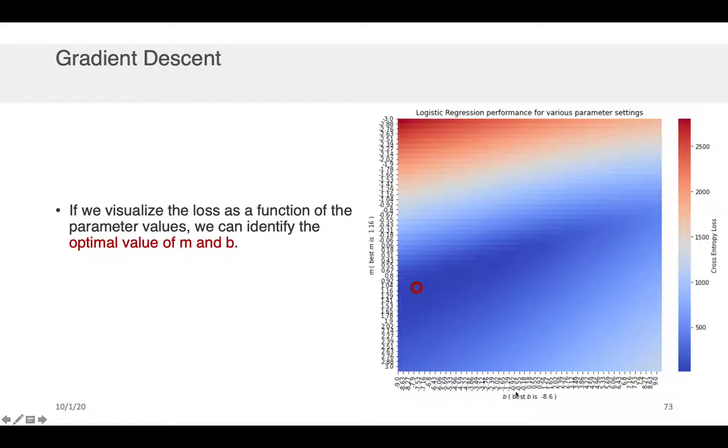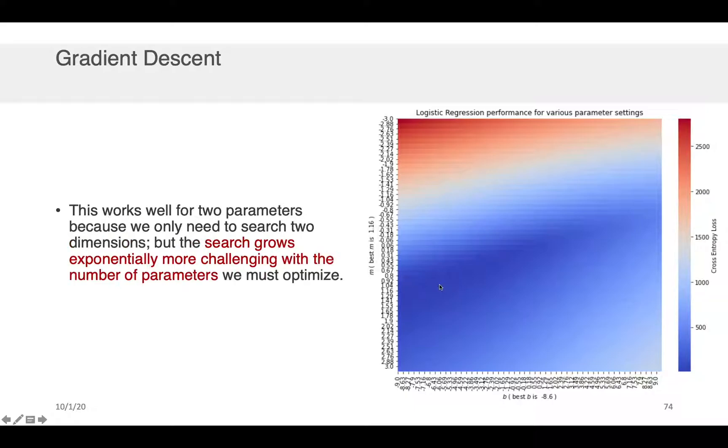And so I can reverse engineer that the best b value is maybe minus 8.6 and the best m value is 1.16. I can do that.